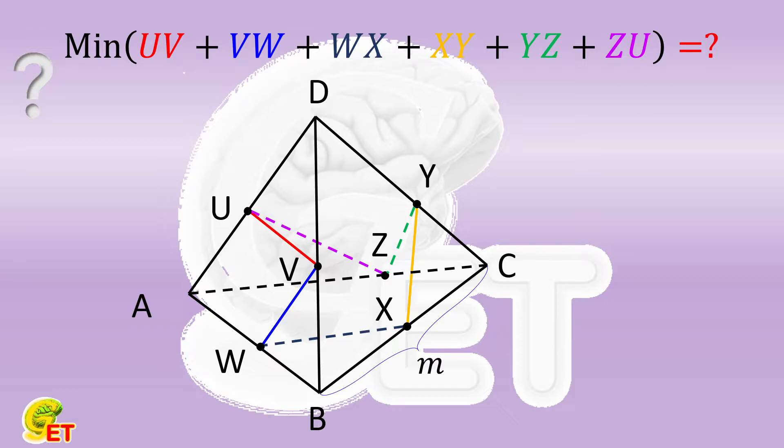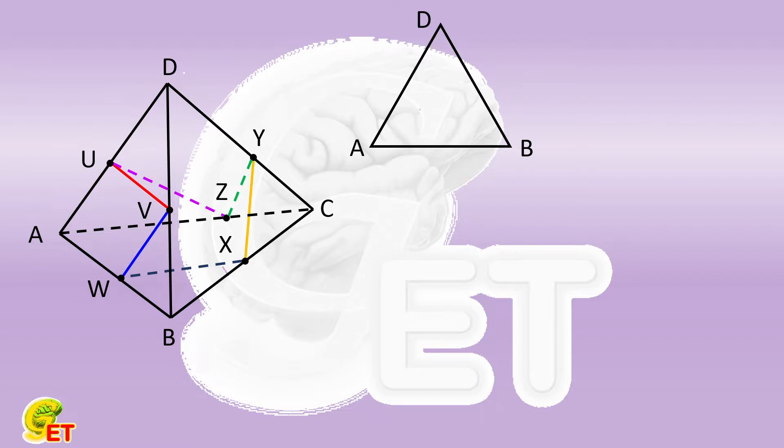Now let's unfold it step by step. We first plot the equilateral triangle ABD. And find point U on the side AD. Then find point V on DB. Find point W on AB.